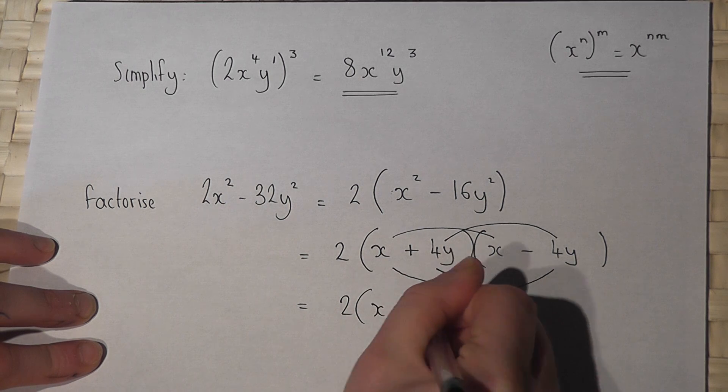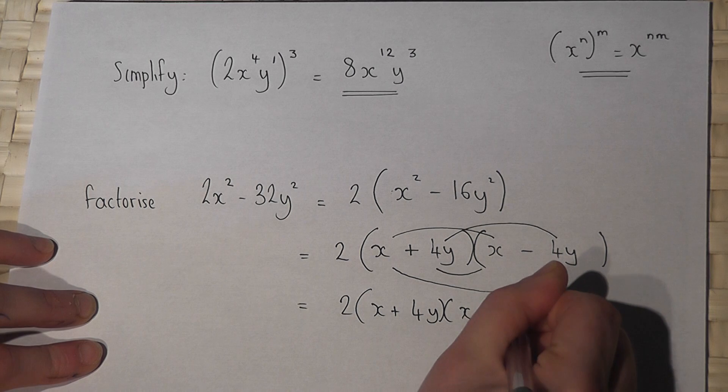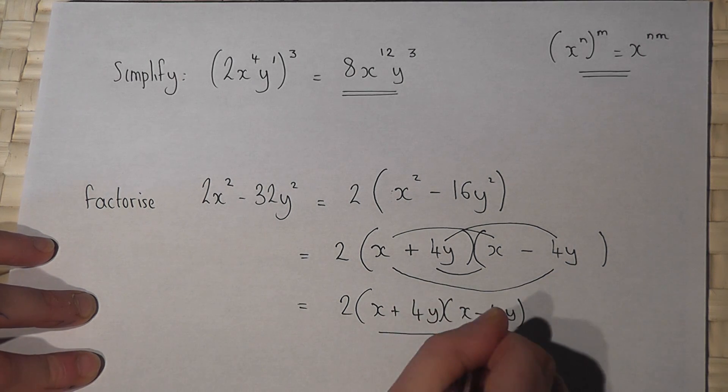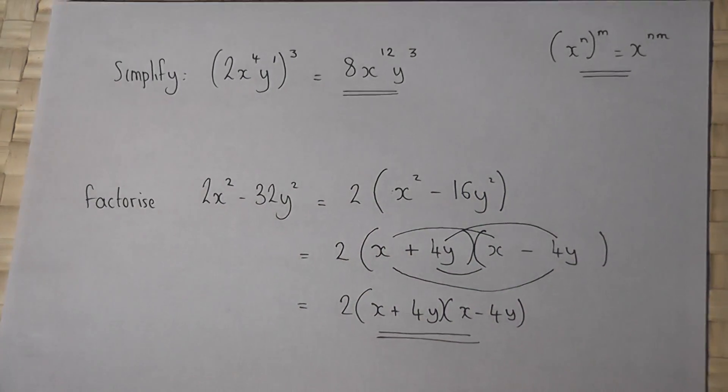So again the answer written out neatly is 2(x + 4y)(x - 4y).